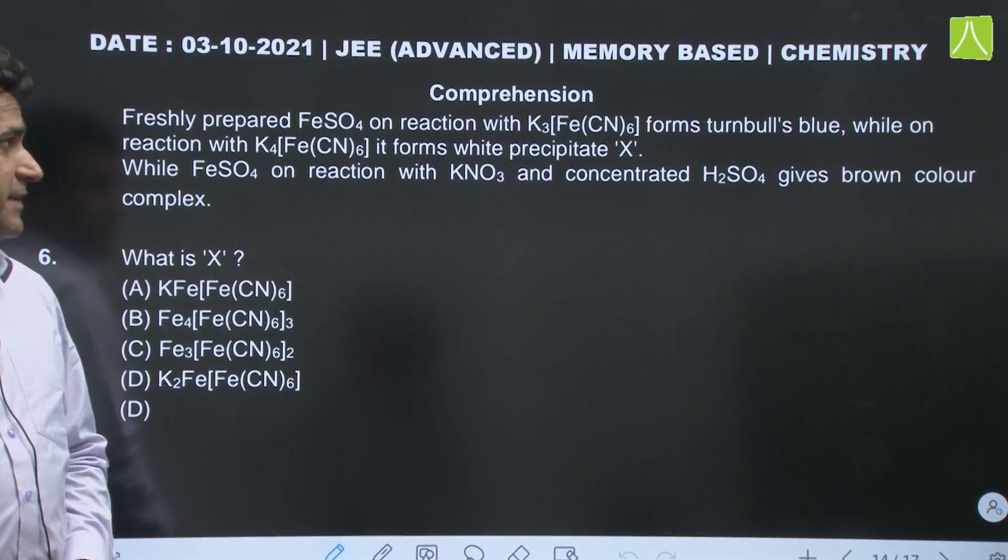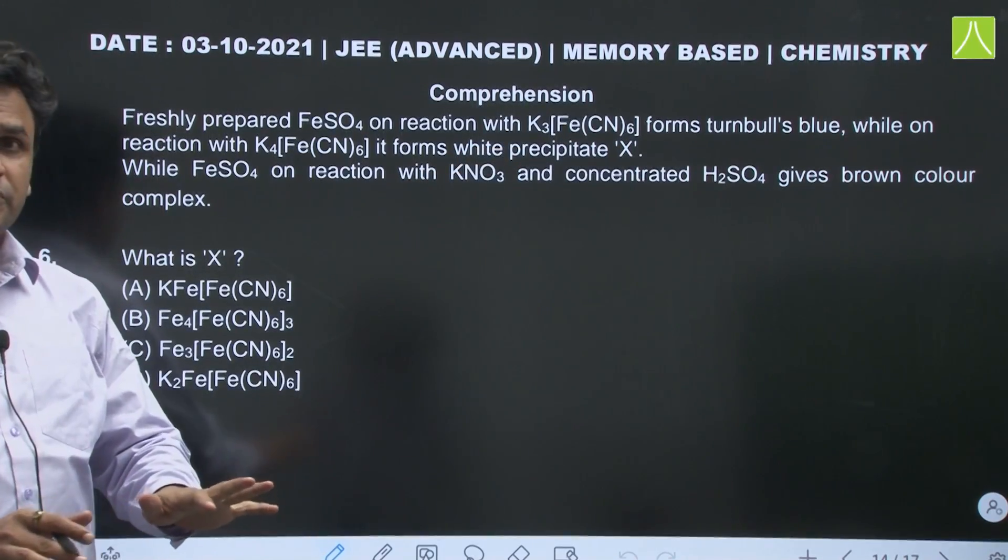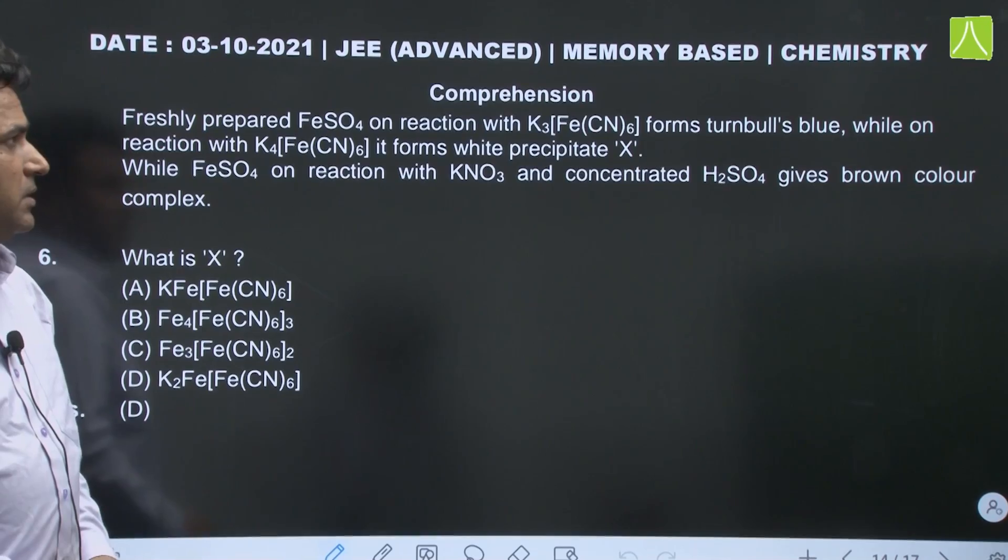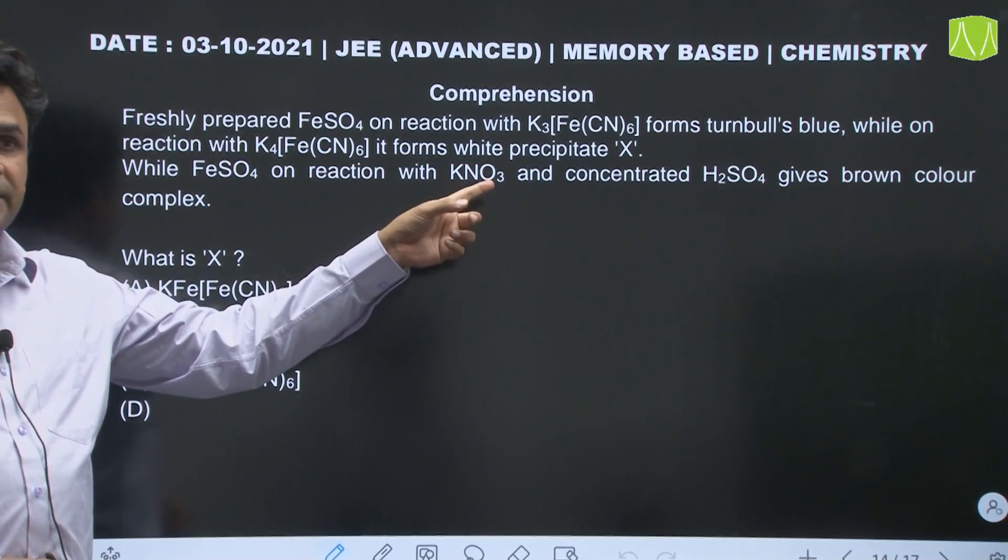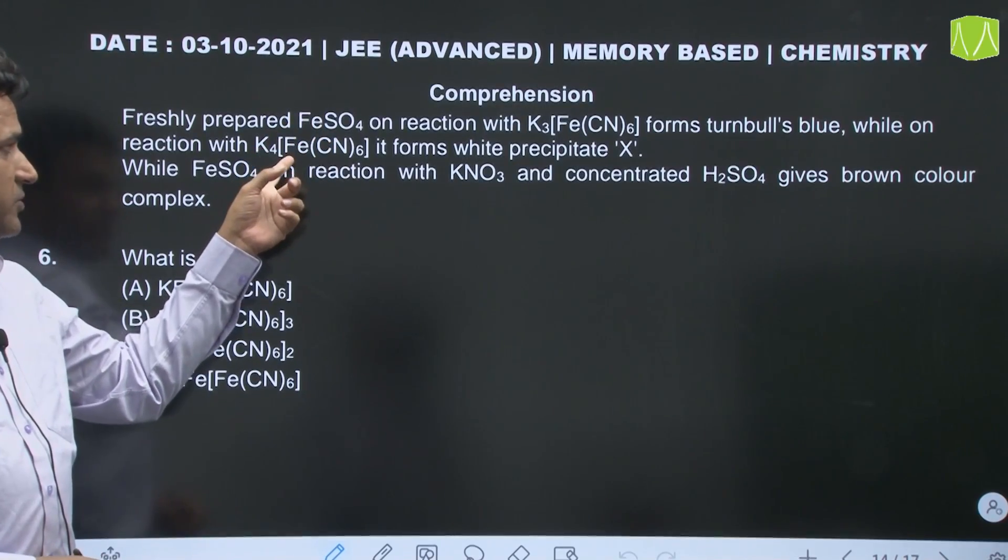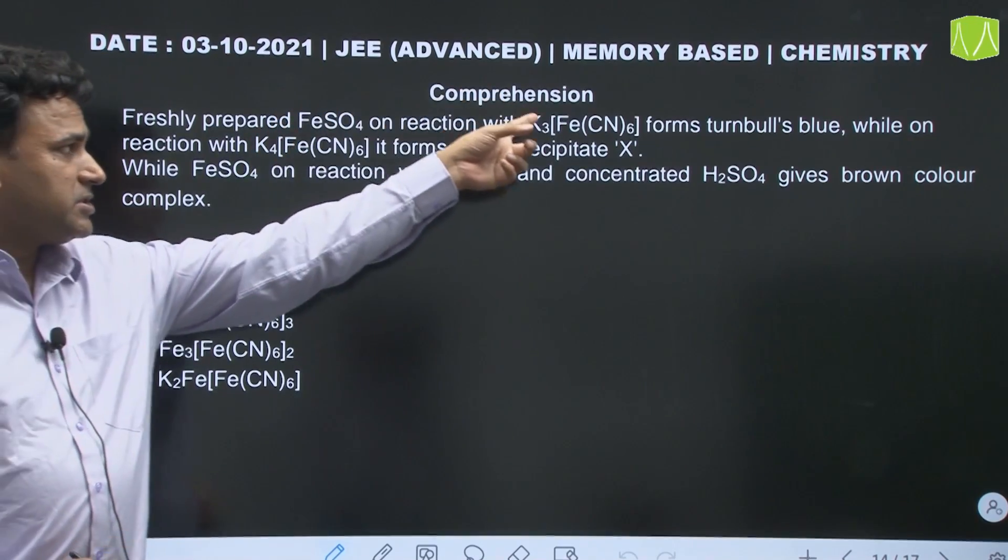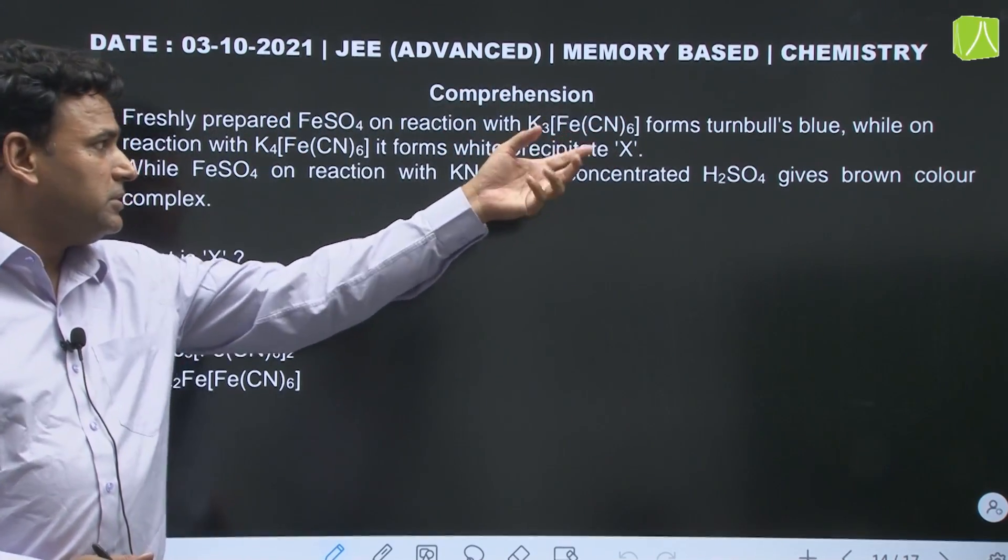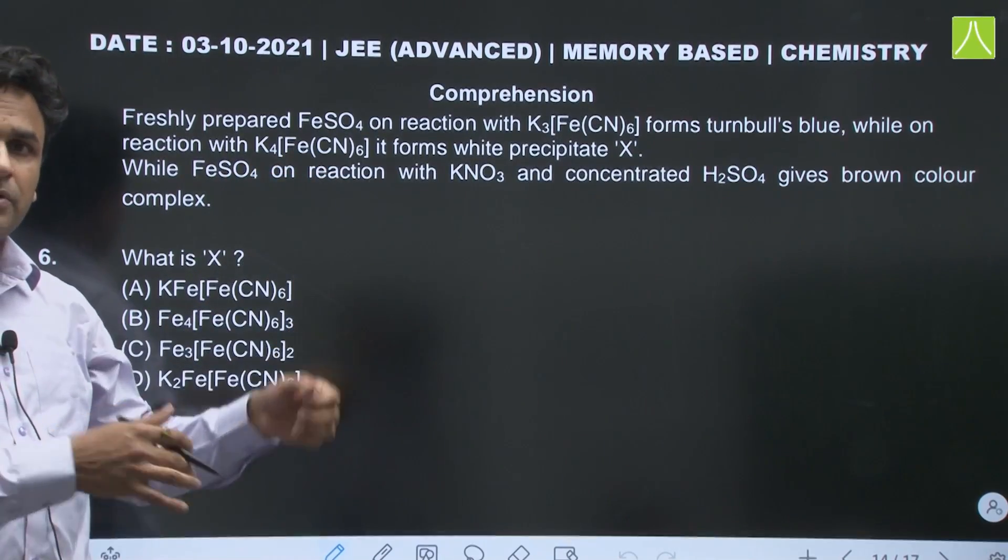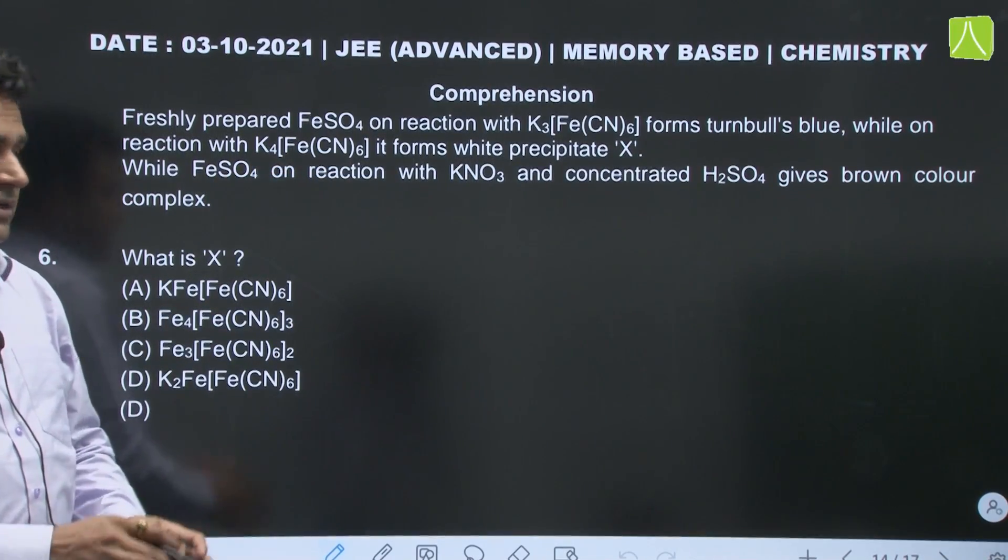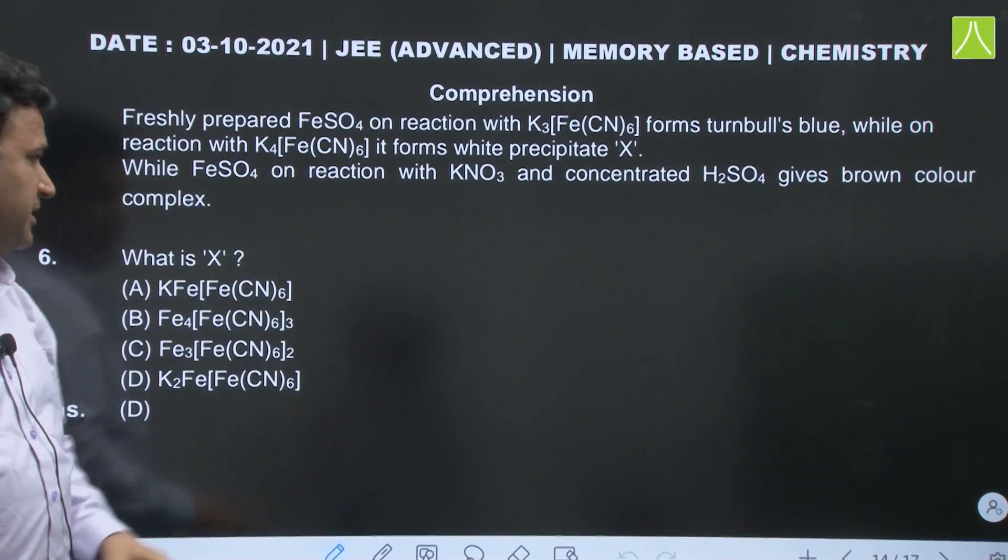Freshly prepared FeSO4 on reaction with K3[Fe(CN)6] forms Turnbull's blue - this fact we all know. While on reaction with K4[Fe(CN)6] it forms a white precipitate. So ferrous with ferricyanide, both irons are in +2 and +3 oxidation numbers, that is going to form Turnbull's blue. But this reaction of ferrous with ferrocyanide we already have studied in qualitative analysis - this is going to give us white precipitate.